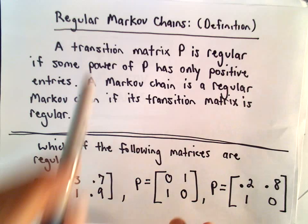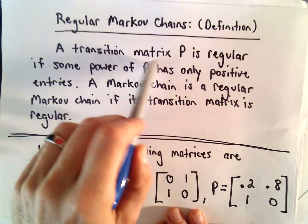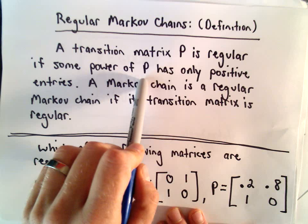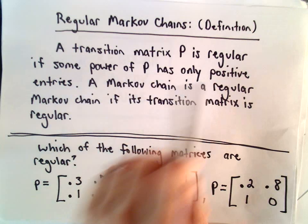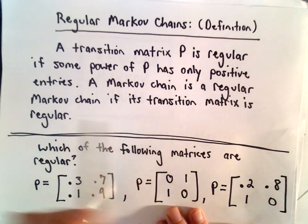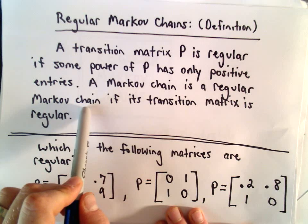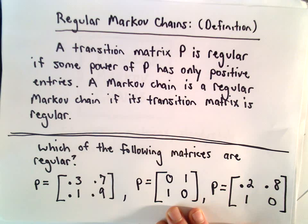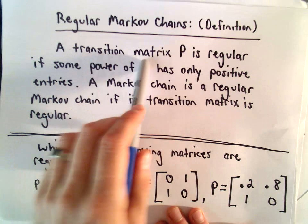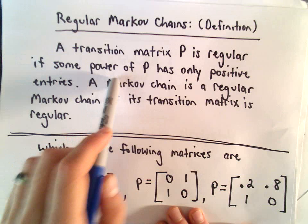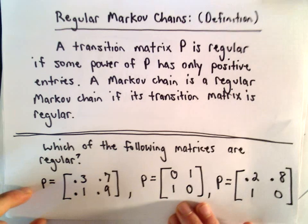We say a transition matrix P is regular if some power of P has only positive entries. We say a Markov chain is a regular Markov chain if its transition matrix is regular. So we're just looking for a transition matrix P where some power of it has only positive entries.